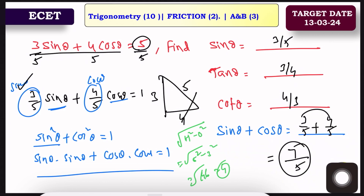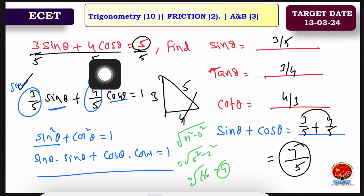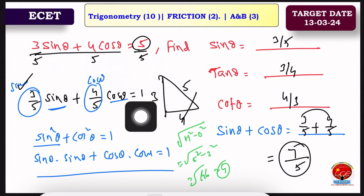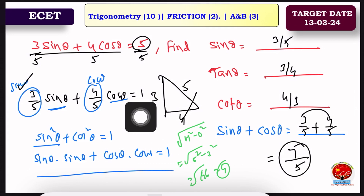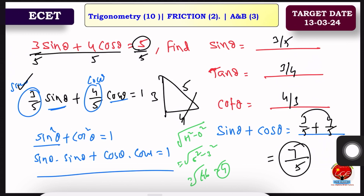So sinθ + cosθ — we find the values and apply the unitary formulas as shown. We find out the answer is 7/5. Okay, we will go to the next question.